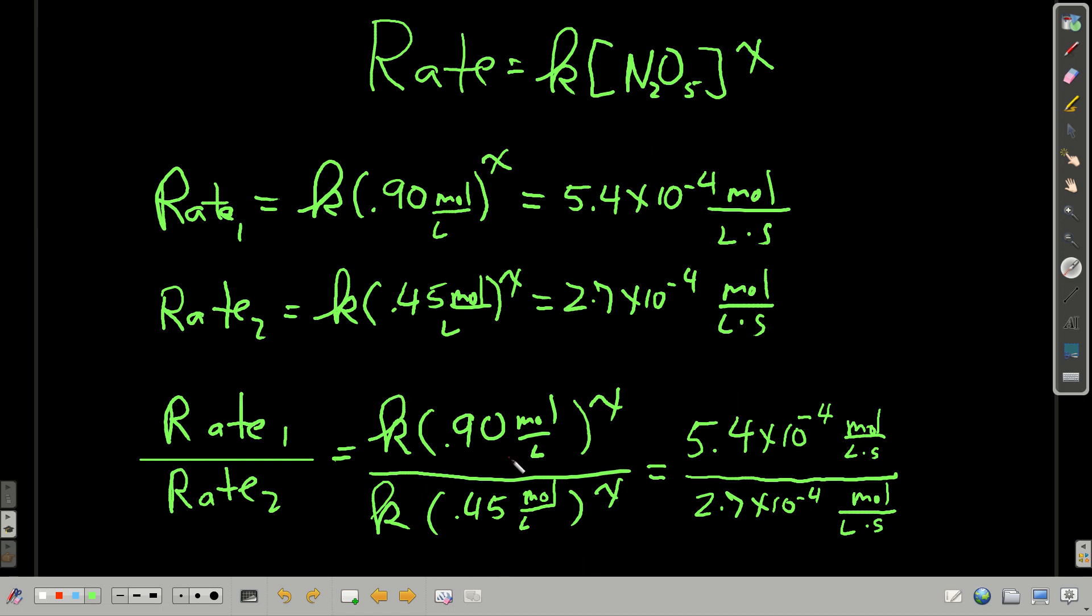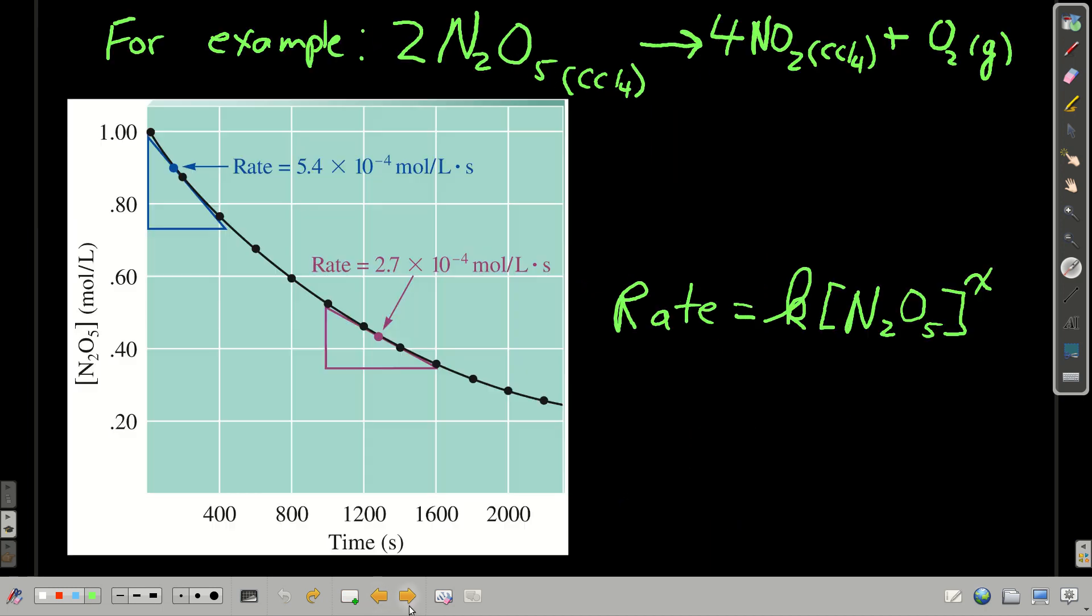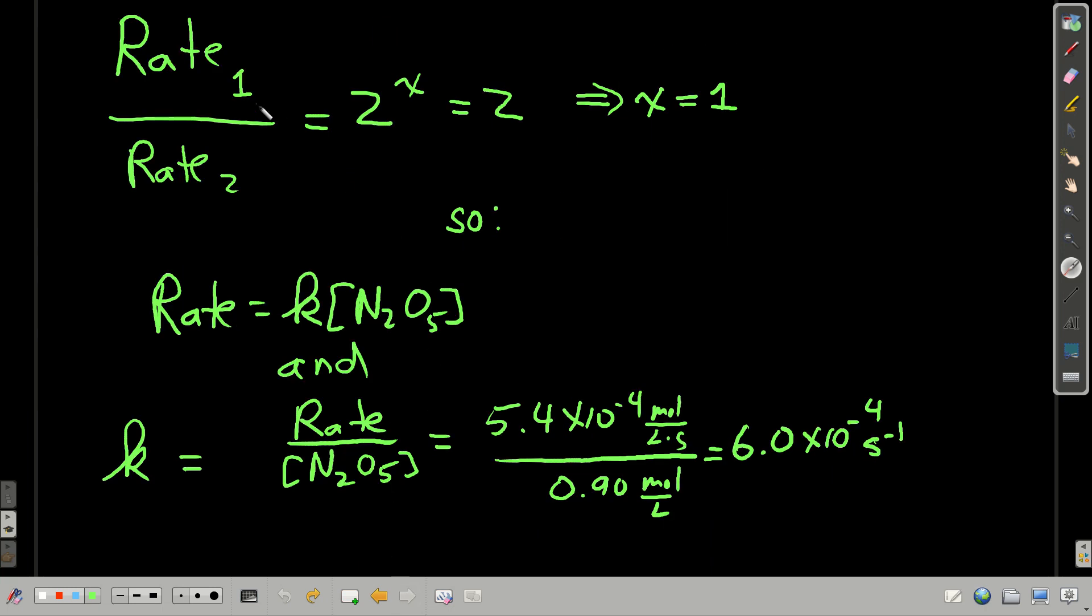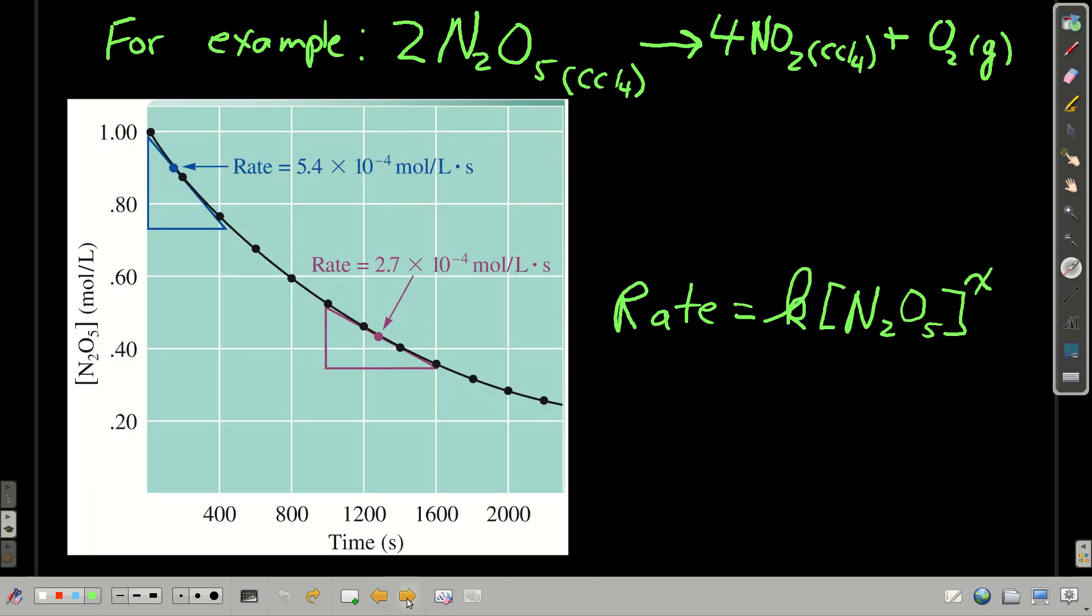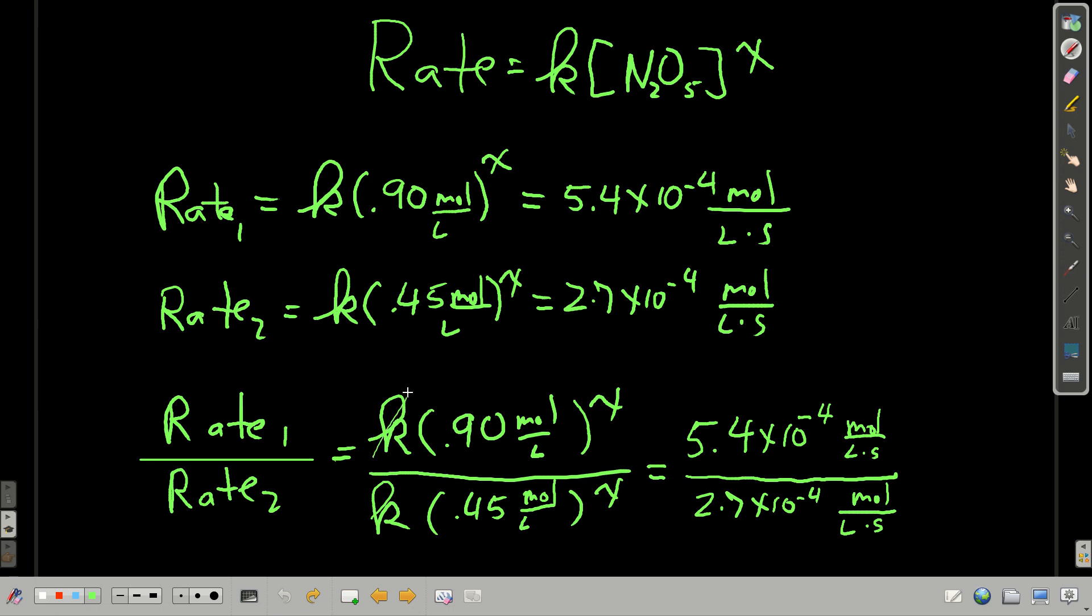So we're going to reduce that. So 0.9, 0.45, X, X, 5.4, 2.7, minus 4th. So the K's cancel. They're gone. 0.9 over 0.45 is 2 to the X. 5.4 times 10 to the minus 4th over 2.7 times 10 to the minus 4th is 2. So it looks like this.